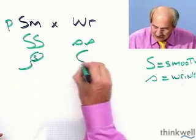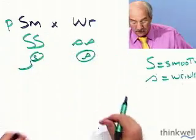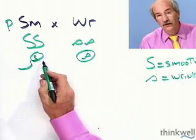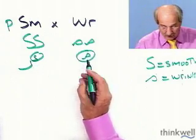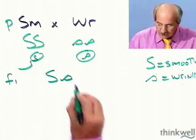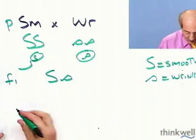And the eggs that this one will produce, or if this were the female the eggs that this one would produce and the sperm that this would produce, you have no choices. This is always going to produce big S, this is always going to produce little s, and so your F1 is going to be big S little s. That's where we are now.